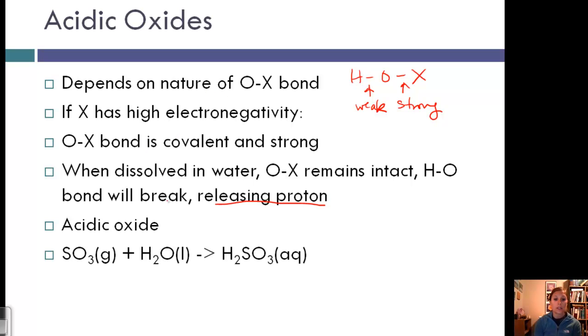For example, SO3 plus water gives H2SO4 - that's a strong acid. We have sulfur bonded to oxygens, and the hydrogens are bonded to these oxygens. The S-O bonds stay intact because those are covalent bonds, whereas the O-H bonds will break. That's how we get the strong acid.